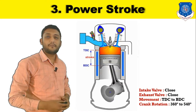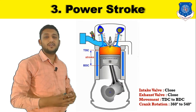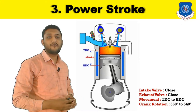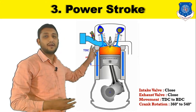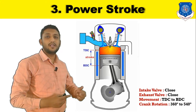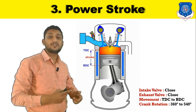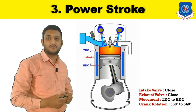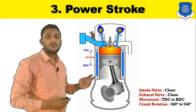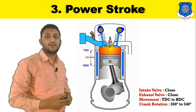Moving on to the power stroke. In a petrol engine, the petrol fuel is ignited by means of a spark plug. After completing the compression stroke and before starting the power stroke, the spark from the spark plug occurs, which ignites the air and fuel mixture.